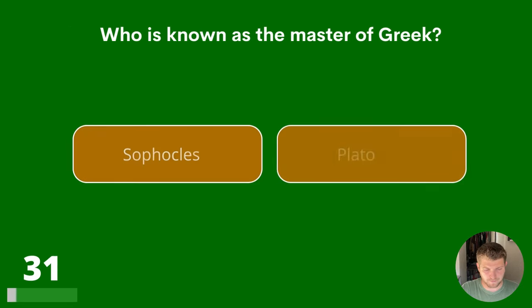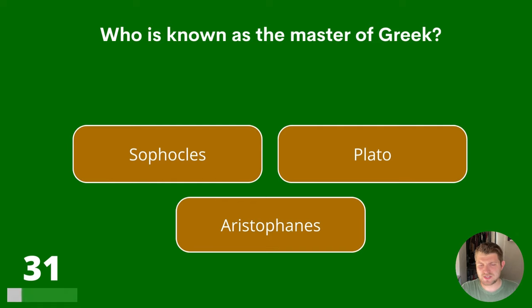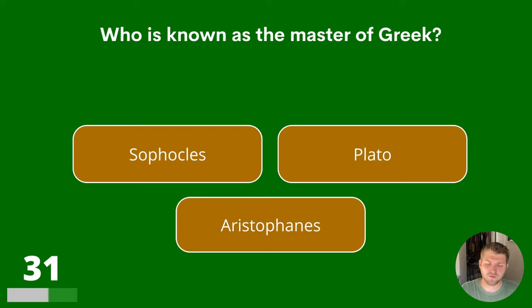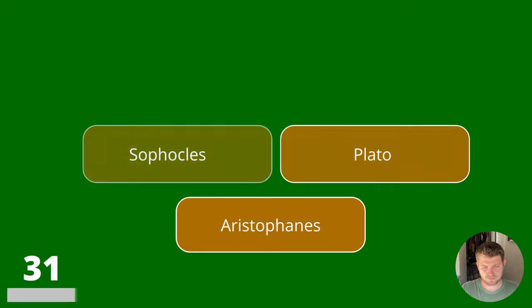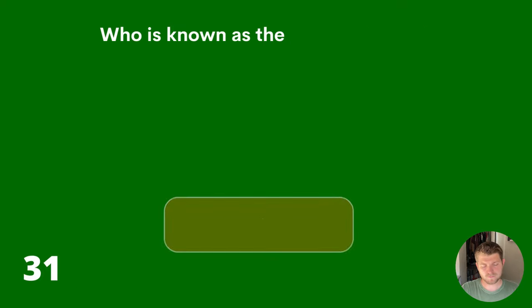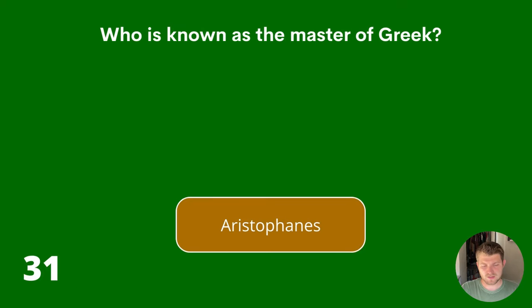Question 31. Who is known as the Master of Greek? Sophocles, Plato or Aristophanes? The answer is Aristophanes.